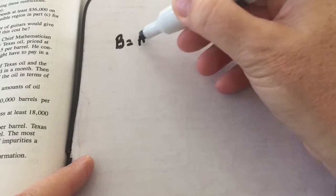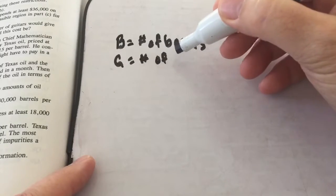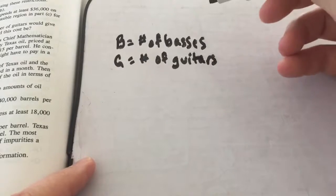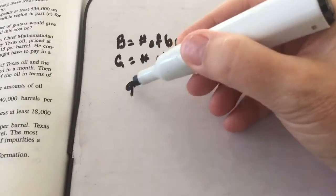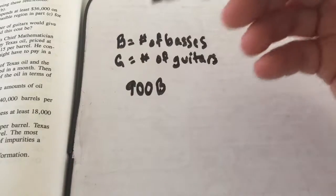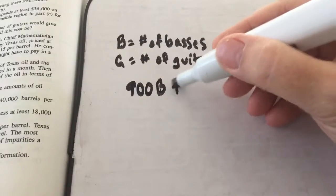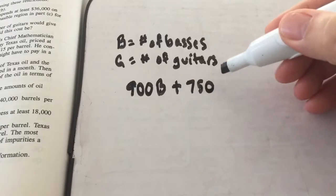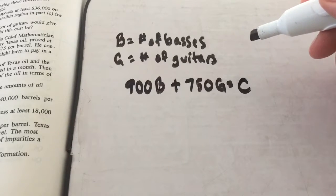For part A, we write an equation — our cost function. B is his number of basses and G is his number of guitars. Each bass is $900, so to buy B basses he pays 900B. If he buys one bass he pays 900 times 1; if he buys 10 basses he pays 900 times 10. Each guitar is $750, so it's 750G. This gives us our cost function: C = 900B + 750G.